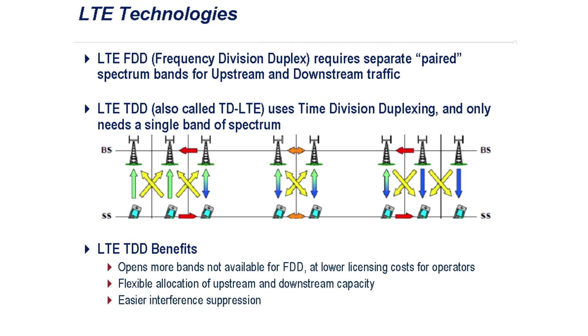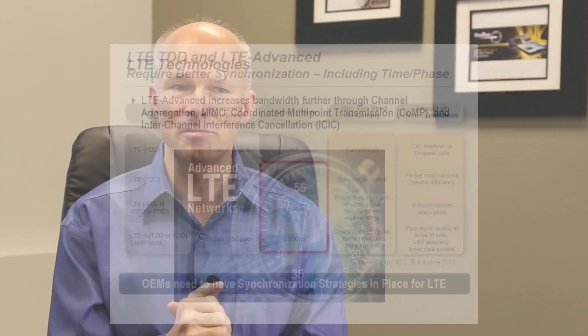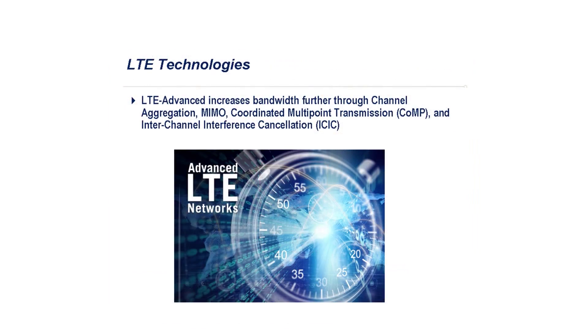In TDD, you share the same spectrum in the upstream and downstream direction, but you time division duplex. So you have downstream separately in one time slot and then upstream in another time slot. This is called TDD LTE, sometimes also called simply TD-LTE.